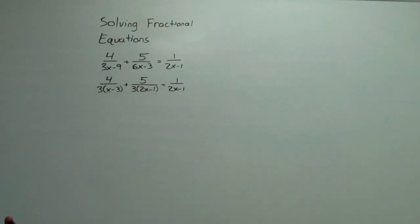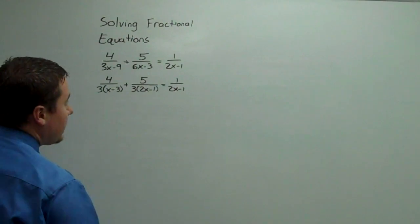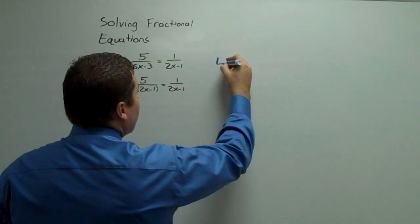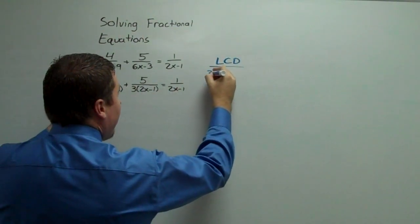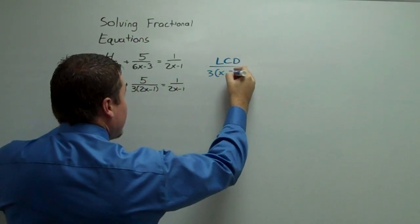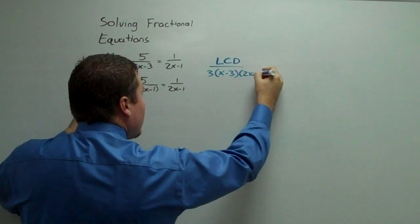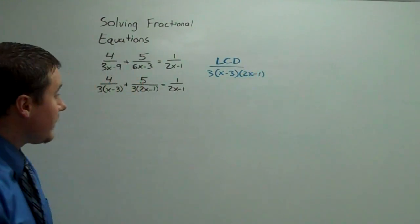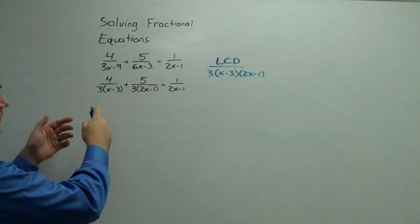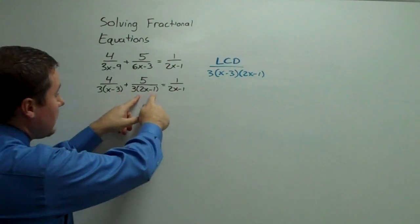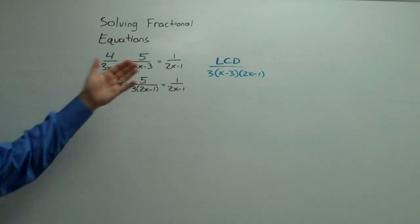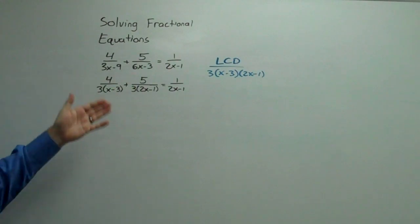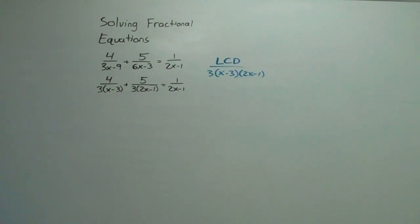Indeed, we do have a least common denominator. Specifically, it's got to have a 3, an x minus 3, and a 2x minus 1. If it has those three factors, it will contain each of the individual denominators as factors. That's going to be very useful because if we multiply every term by the LCD, we will cancel out and lose all of our fractions.